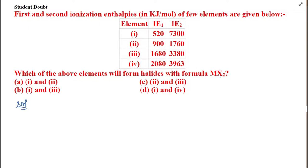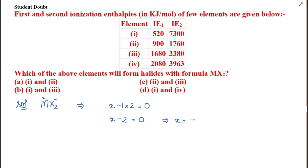To find the element, we should know the oxidation state or valency of that element. Since the formula is MX₂, I can find the valency. Halides always carry a minus one oxidation state, so assuming the element has valency x: x + (−1 × 2) = 0, which gives x = +2. So this element has oxidation state +2.